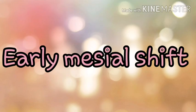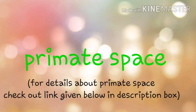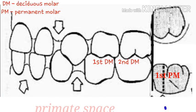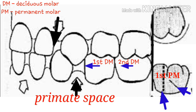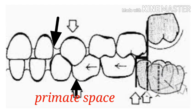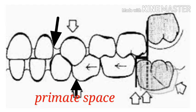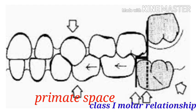Early mesial shift occurs in the early mixed dentition period by using primate space. The erupting force of the first permanent molar is sufficient to push the deciduous first and second molars forward to close primate spaces and establish a Class I molar relation.